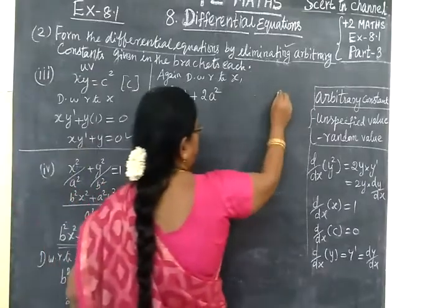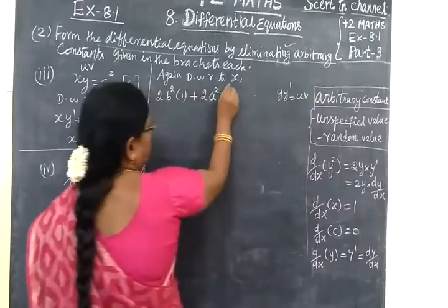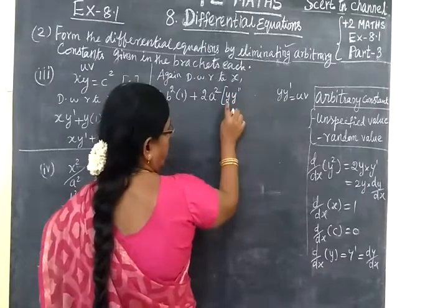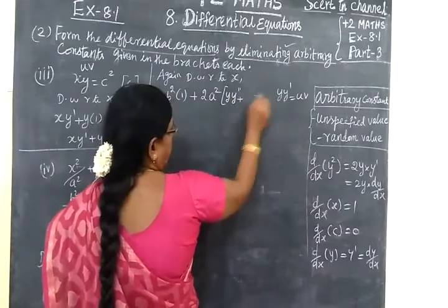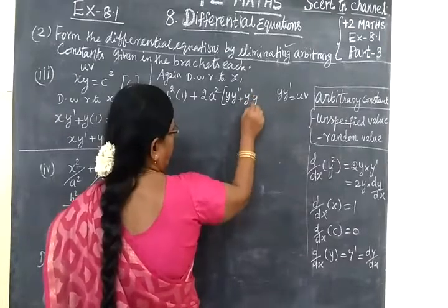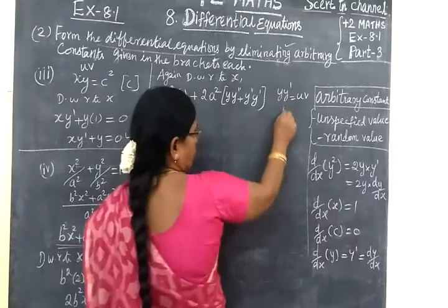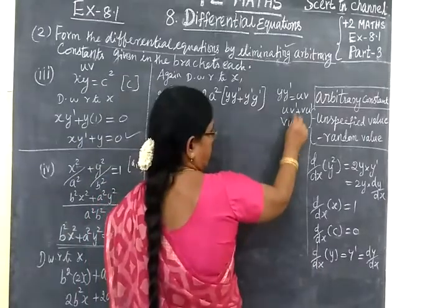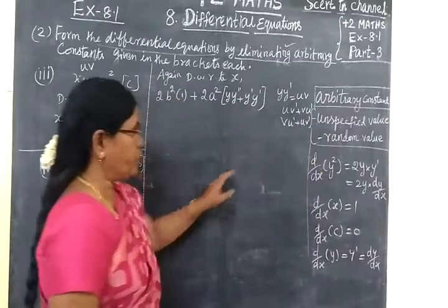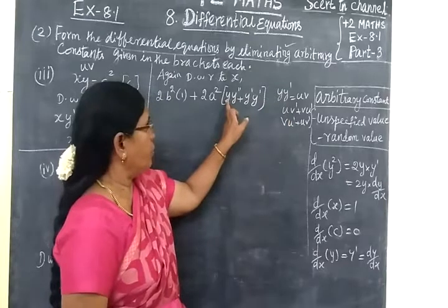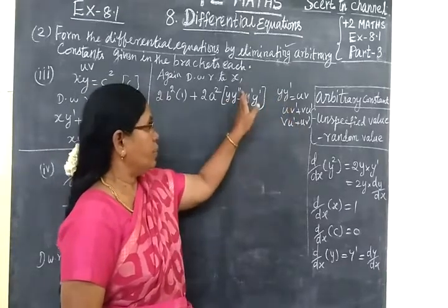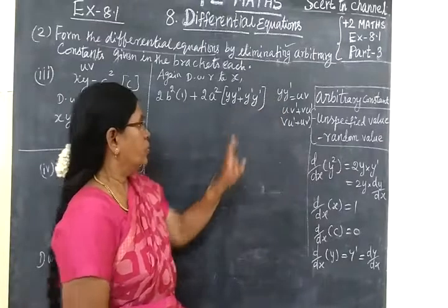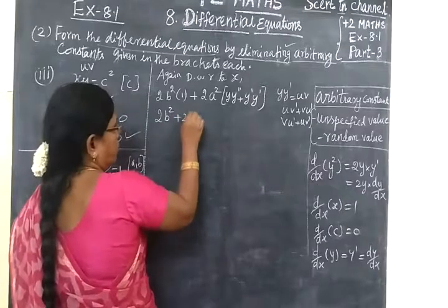Now differentiate again using the UV method. UV method gives: first function into differentiation of second function, plus second function into differentiation of first function — that is, uv' plus vu'. So first function appears with y double dash, plus second function appears with y dash. This equals 2B squared plus 2A squared.